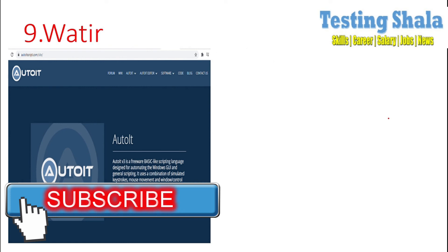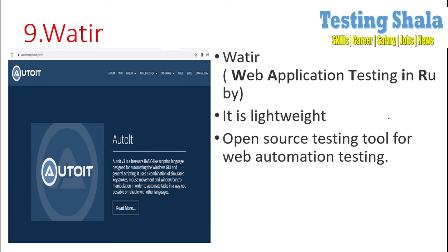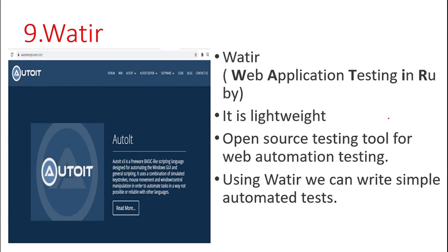The next one is Watir, which is another tool used to bring automation for your web application. Watir stands for Web Application Testing in Ruby — that is its full form. It is a very simple, lightweight, open source tool which can be used for web application testing. Using Watir, you can write simple automated test scripts.